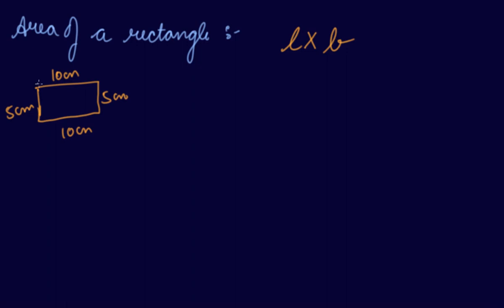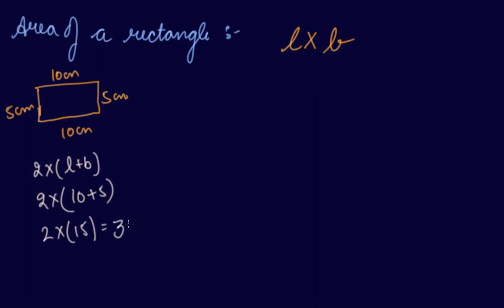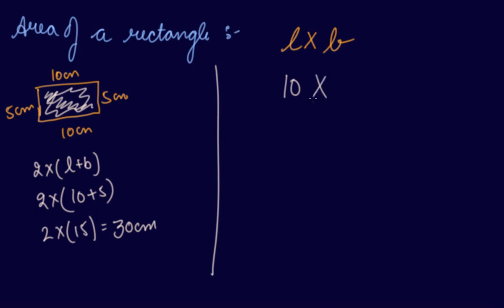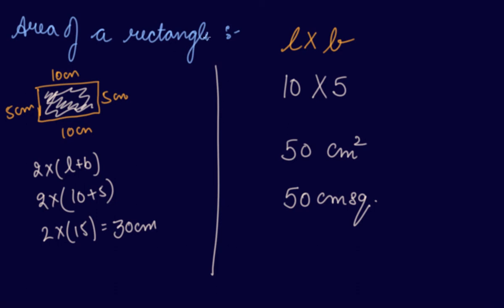If you have to find the perimeter, it will be 2 into length plus breadth — that is 2 into 10 plus 5, which is 2 into 15, so 30 centimeters is the perimeter. But if you have to find the area, that is the enclosed surface, length into breadth will be the area. So 10 into 5 is 50 centimeter square, which is the area of the rectangle.